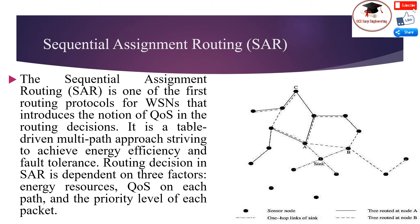Each sensor node records two parameters about each path through it: the available energy resource on the path and an additive QoS metric such as delay. This allows a node to choose one path from among many to relay its message to the sink. The SAR algorithm chooses a path with high estimated energy resources, and a weighted QoS metric is used to handle prioritized packets, computed as a product of priority level and delay. The routing ensures that the same weighted QoS metric is maintained.